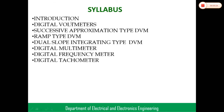The syllabus for this unit covers: introduction to digital voltmeters. In this topic, we cover the comparison between digital and analog voltmeters. We also cover the successive approximation type of DVM, the ramp type, and the dual slope integrating type of DVMs — these three are the classifications of DVMs.